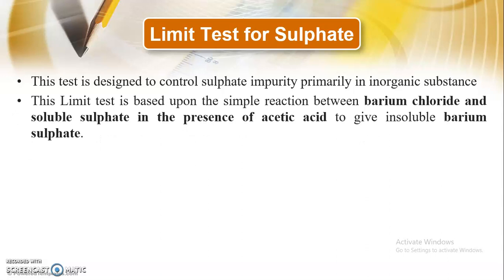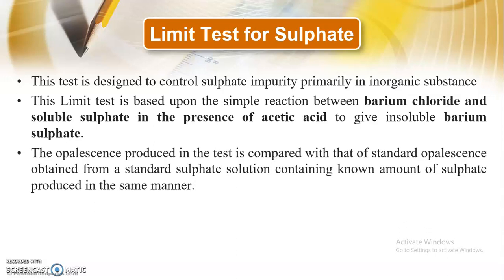This limit test is based upon the simple reaction between barium chloride, which is added to our solution, and the soluble sulphate in presence of acetic acid, which gives us insoluble barium sulphate. Like the chloride test, the principle and statement is quite the same — the reaction between barium chloride and soluble sulphate in presence of acetic acid gives insoluble barium sulphate.